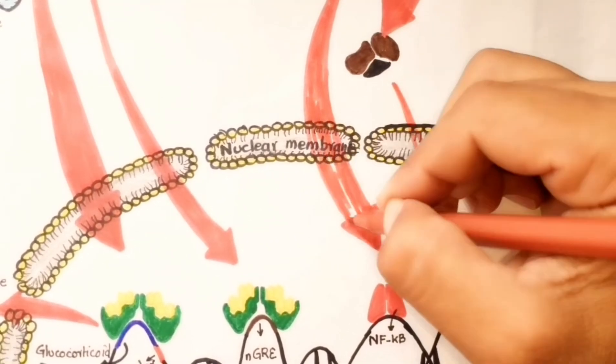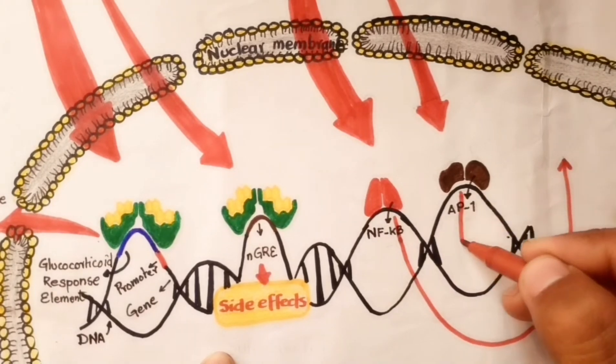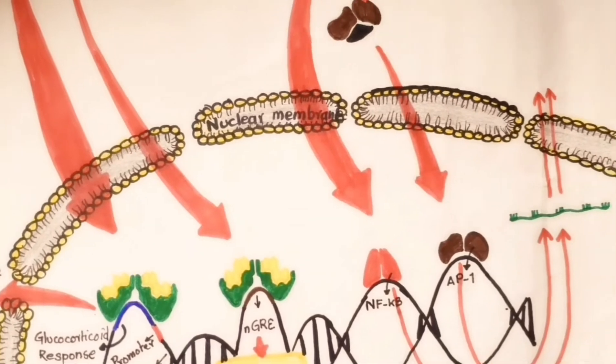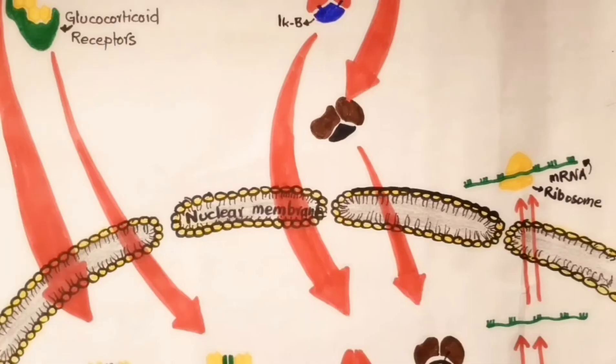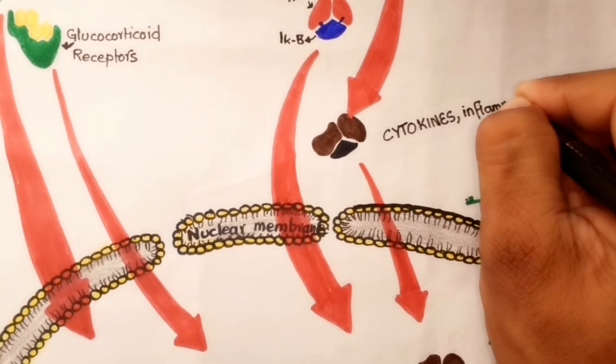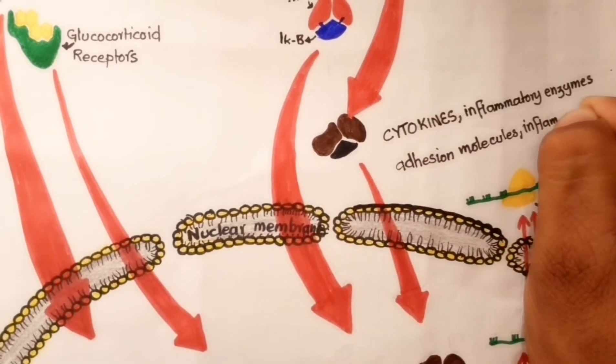As pro-inflammatory transcription factors, they bind to specific regions in DNA and start transcription of genes into mRNA and then to many inflammatory proteins such as cytokines, inflammatory enzymes, adhesion molecules, and inflammatory receptors.